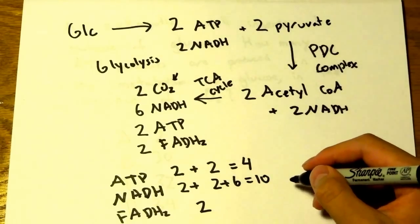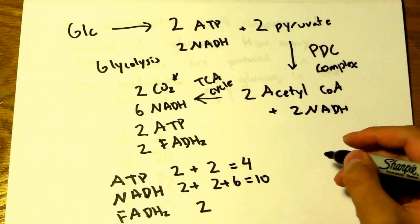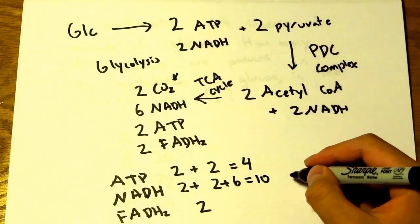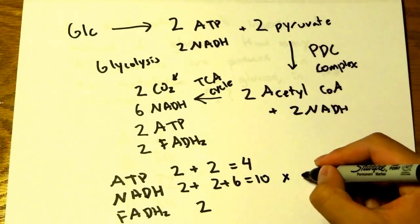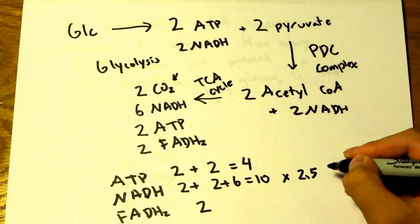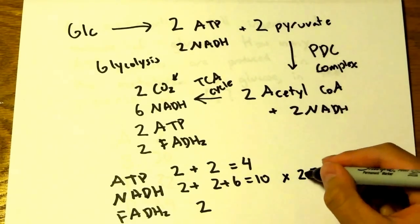You may have learned something different in your classes, but for the MCAT, in the electron transfer chain, every 1 NADH produces 2.5 ATP.